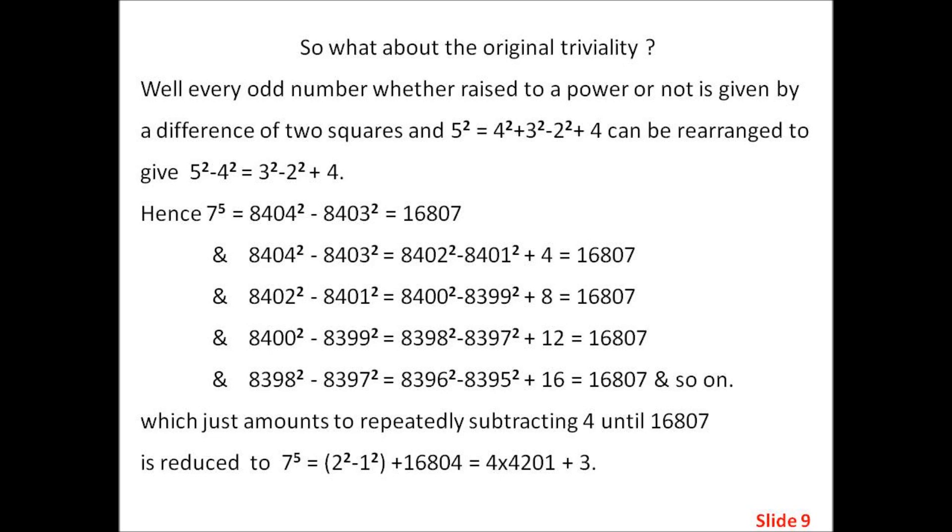And 8400 squared minus 8399 squared equals 8398 squared minus 8397 squared plus 12 equals 16807.